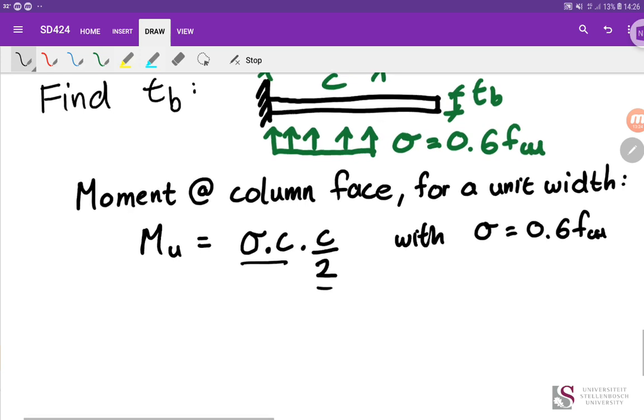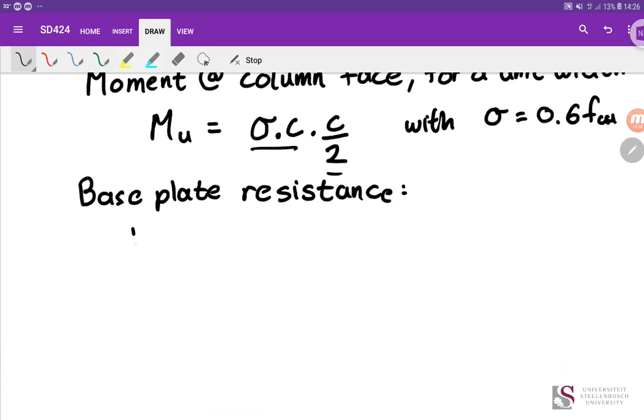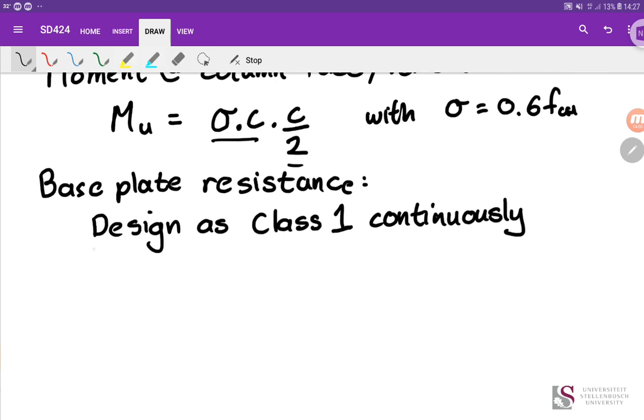Whether it's one meter or one millimeter. It's a distance of one. But so our moment is sigma times C times C over 2. So the first two terms, the sigma times C, so that gives us a force. And then times the distance, the lever arm. So we're going to go down with equals 0.6 Cu. Now, the base plate resistance. This is just a flat plate. So when it bends, it's not going to experience any buckling. That means we can design as a class 1. As class 1. Remember, class 1 means it's a plastic section that goes right up to the ZP, the plastic inertia value.